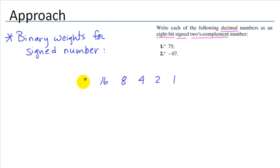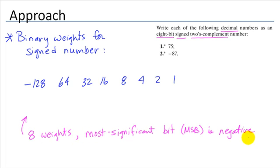Signed means that the value can be positive or negative. 8-bits means we have 8 binary weights. And when we are dealing with signed 2's complement format, then the most significant weight, or the largest weight, also carries the negative sign. So we have a total of 8 weights. The most significant bit is negative, and the other weights are positive.